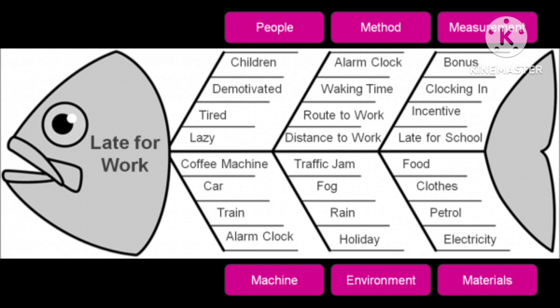Number three — Measurement: this includes lack of motivation through incentives at work, bonus, and late while dropping the children to school. Number four — Machine: machines not working, malfunctioning of certain machines like alarm clocks, copy machines, and breakdown of car or train.